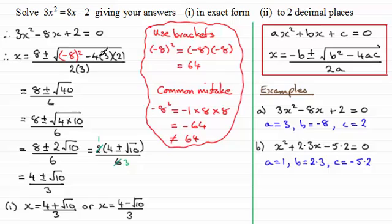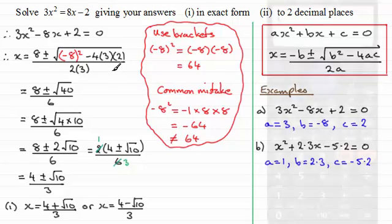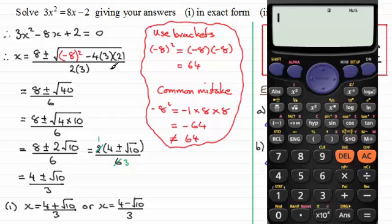Now, I did say that you could enter this into your calculator, and I'll show you how you can do that efficiently. To use a calculator then, I'm assuming you've got a calculator something like this. Press the fraction button, and then just enter the 8 on the top line. Now, instead of plus or minus, we'll just take plus first. Then press the square root sign, and don't forget to press a bracket now and enter minus 8.